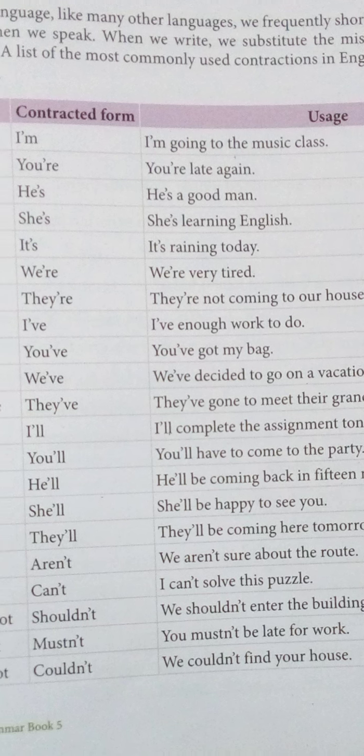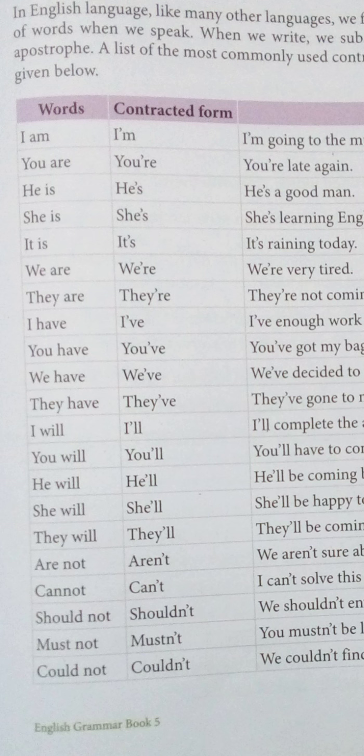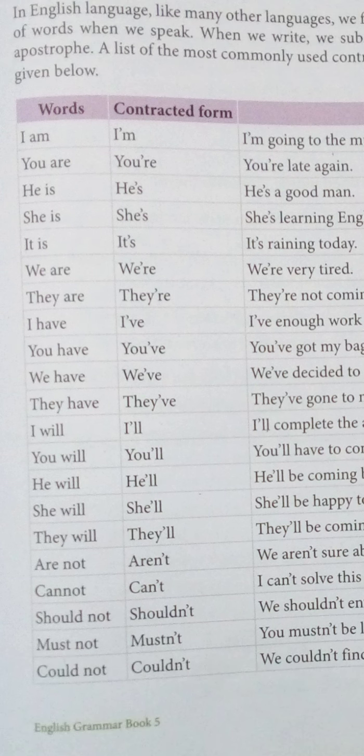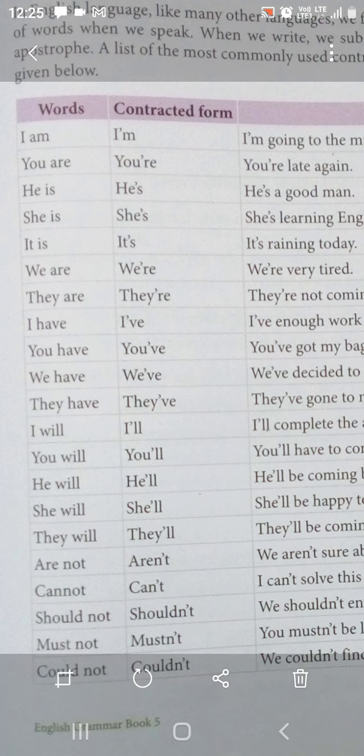Now come to the next one: 'will'. 'I will' ko jab hum contract karenge, toh 'I apostrophe double-L' likhenge — I'll. 'Will' mein se do alphabets — W aur I — miss kiye jaate hain, aur unke place mein apostrophe aa jaata hai. So: you will → you'll, he will → he'll, she will → she'll, they will → they'll.